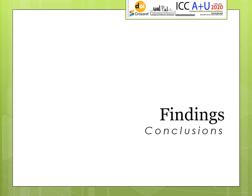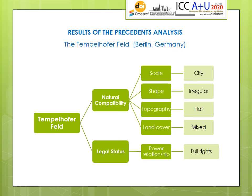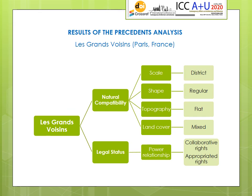Now the findings. The Prinzessinnengarten in Berlin: district-scale, irregular shape, flat topography, paved land cover, and appropriated rights in the power relationship. The Tempelhofer Feld: city-scale, regular shape, flat topography, mixed land cover, and full rights power relationship. Les Grands Voisins: district-scale, regular shape, flat topography, mixed land cover, and the power relationship evolved from collaborative rights to appropriated rights.